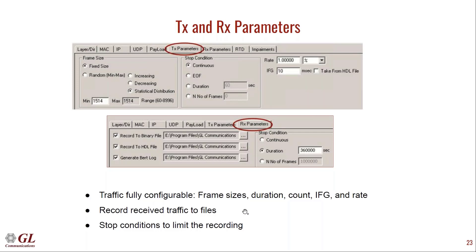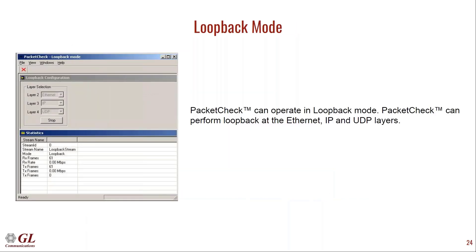This GUI option shows the loopback mode configuration. Here we can enable layer 2, layer 3, and layer 4 for loopback. In this mode, the IP and Ethernet addresses are swapped and the UDP port numbers are swapped, then the traffic is sent back. The statistics show how many frames have been received and transmitted back, RX rate, and other basic statistics available in loopback mode.